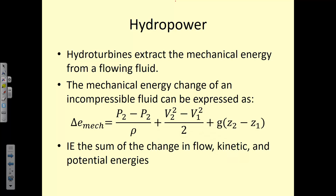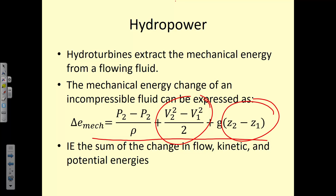Hydro turbines work by extracting energy from the flowing fluid. It's run through a turbine, and if you attach that to a generator, you can generate electricity. The mechanical energy of a flowing fluid has three components: kinetic energy, potential energy, and flow energy — the pressure differential between upstream and downstream flow divided by density, which we've also seen earlier in the semester as specific volume multiplied by the pressure differential.